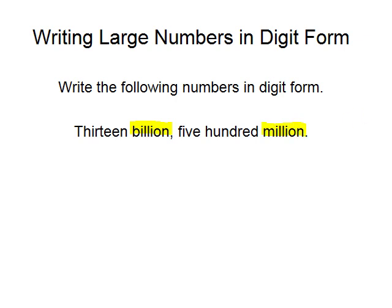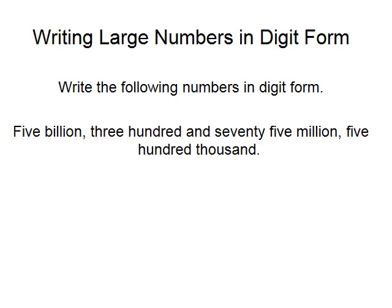We don't have the word thousands here, but we will need to do something about that shortly. So 13 billion is 13,000 — leave a gap. Now we need to state the obvious: there are no thousands, no hundreds, no tens, and no units. So the number is 13,500,000,000.